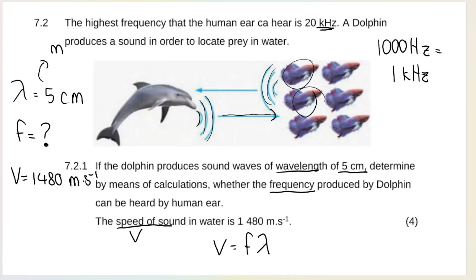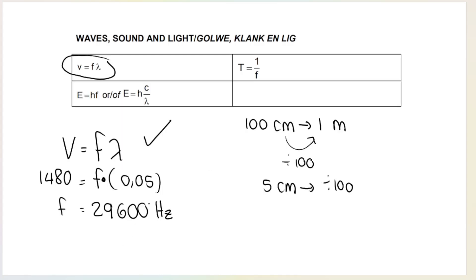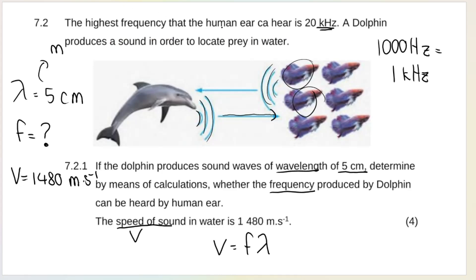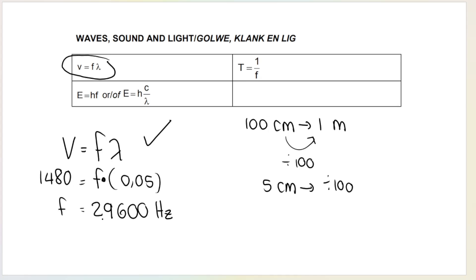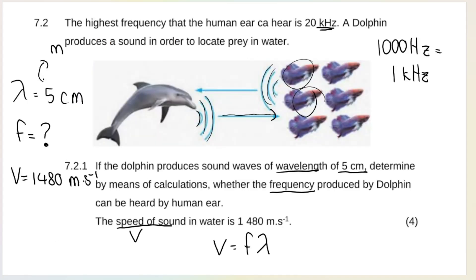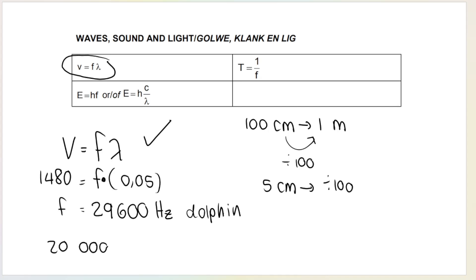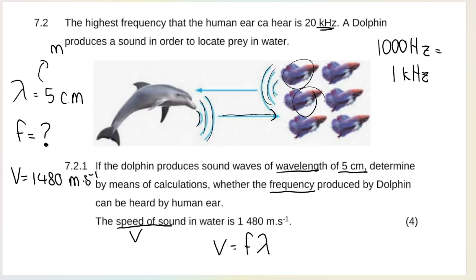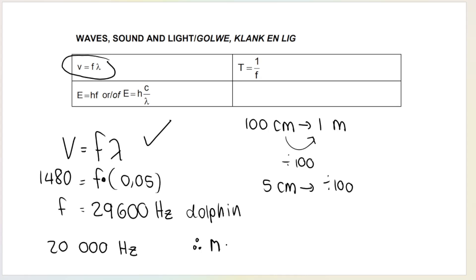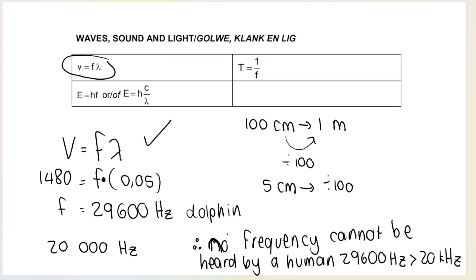29,600 hertz makes sense because these animals produce sounds with very high frequencies. The question stated the highest frequency the human ear can hear is 20 kilohertz, which is 20,000 hertz. Since the dolphin's frequency of 29,600 hertz is greater than 20,000 hertz, the frequency cannot be heard by a human.